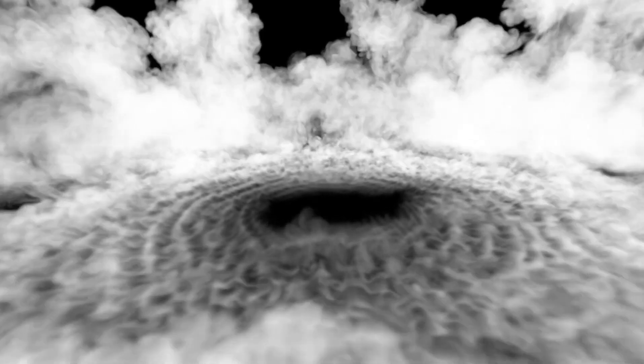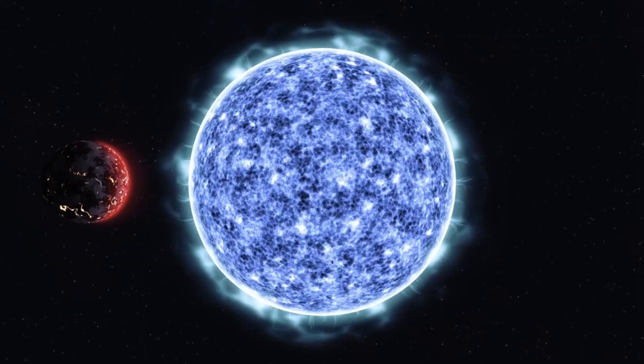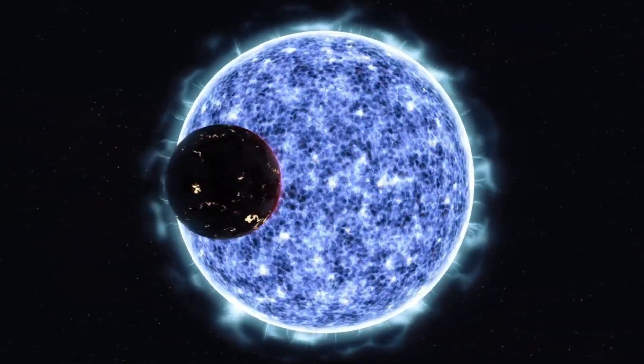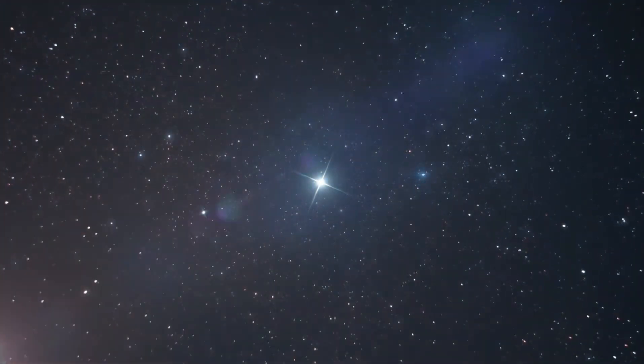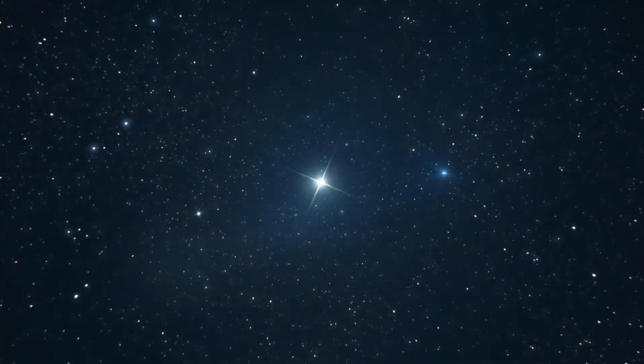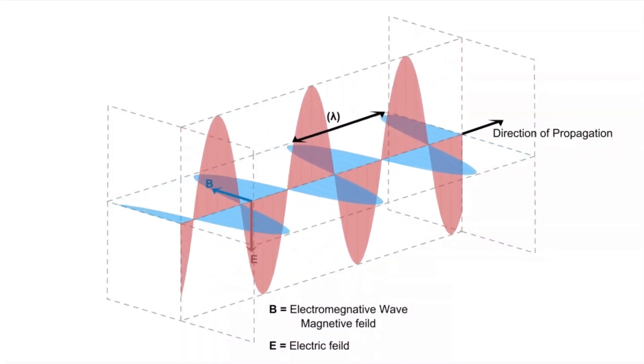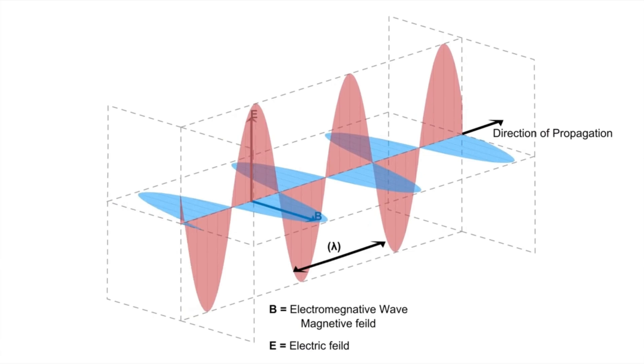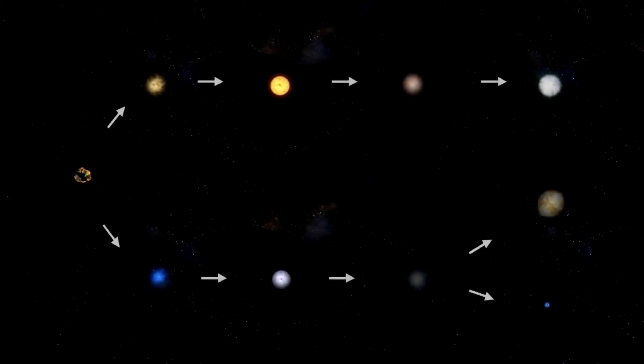Gravity, the force that pulls matter inward, acts as a constant pressure attempting to collapse the star under its immense mass. Opposing this inward pull is the radiation pressure generated by nuclear fusion occurring within the star's core. Fusion reactions release tremendous amounts of energy, producing outward pressure that counters the force of gravity. This continuous push-and-pull relationship between gravity and radiation pressure defines the structure and behavior of stars.